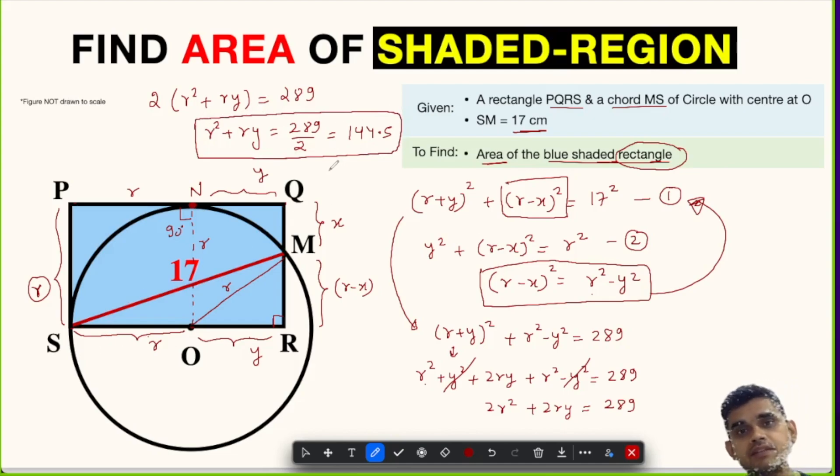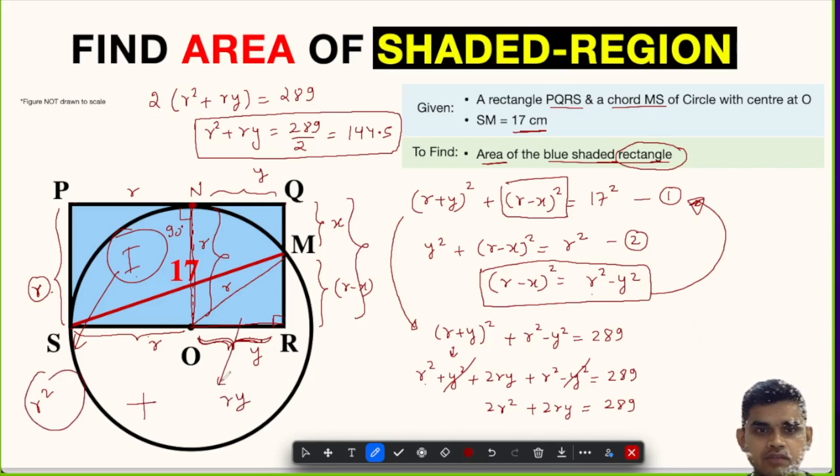Now we have found the value of R² + RY. Now how are we going to link this with finding the area of this blue rectangle? If we focus on this entire rectangle, it can be divided into two parts. The first part is this, which is a square, and the area of a square is side times side. So R times R is R². So this is R², and this is a rectangle whose length is Y units and width is R. So the area is R times Y.